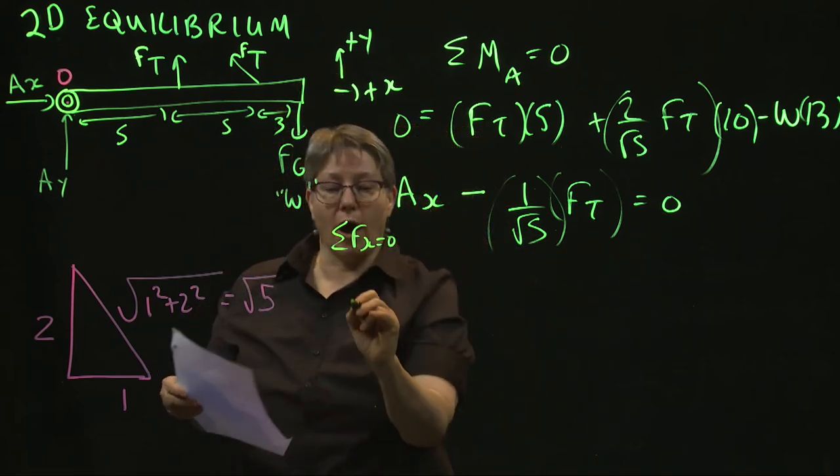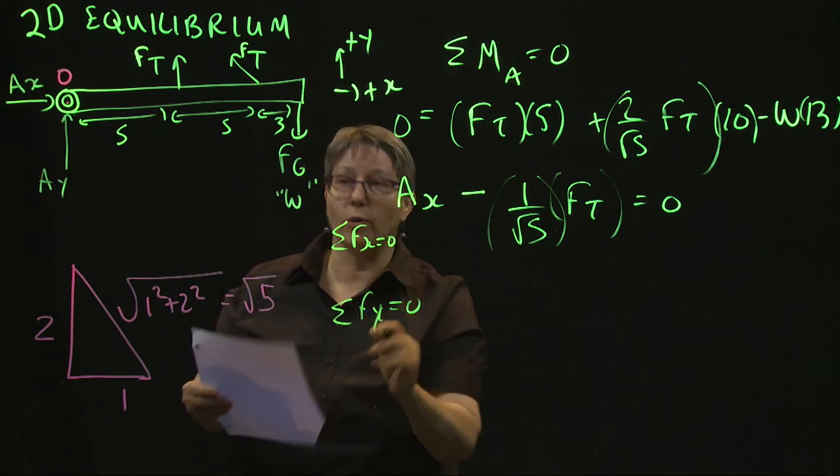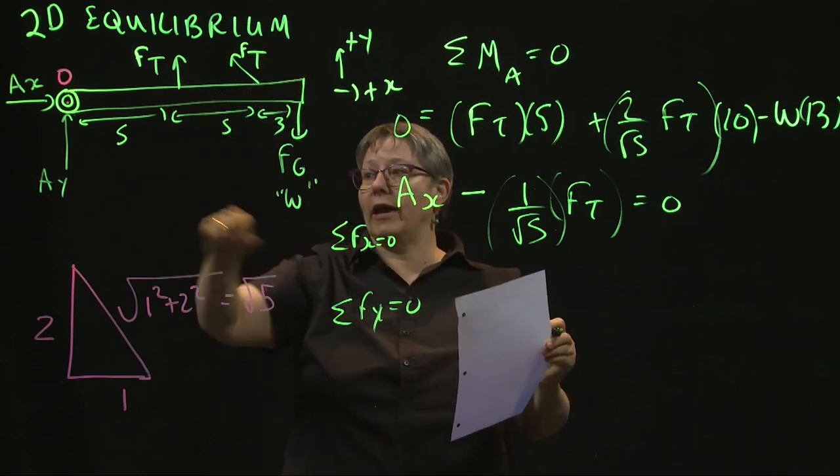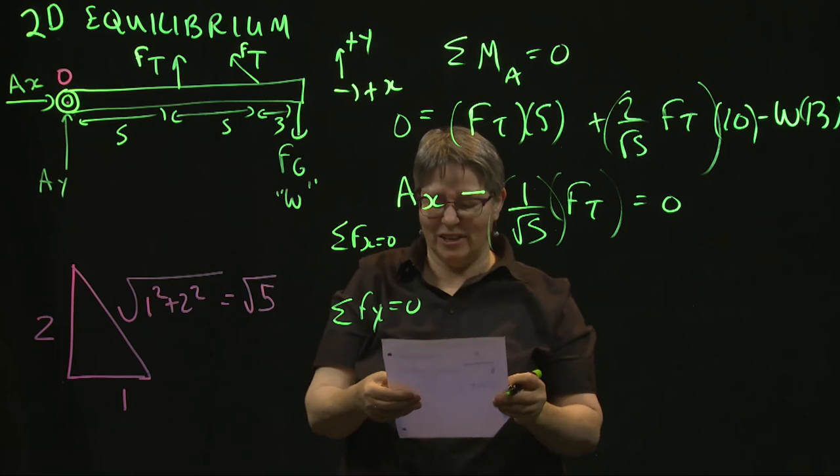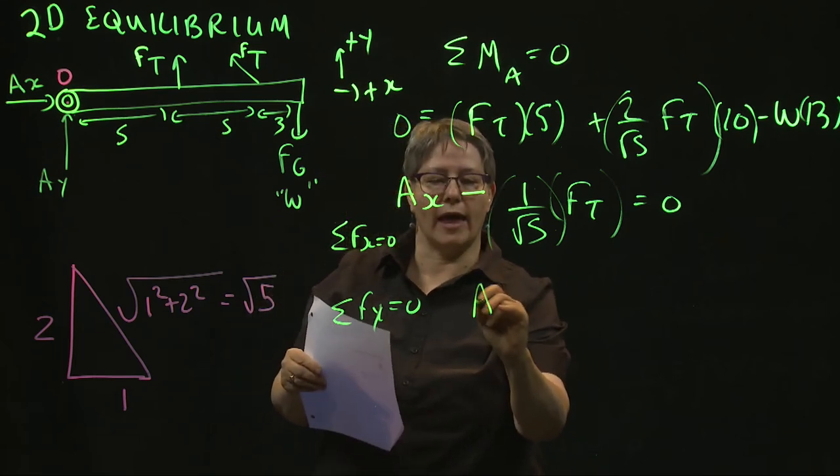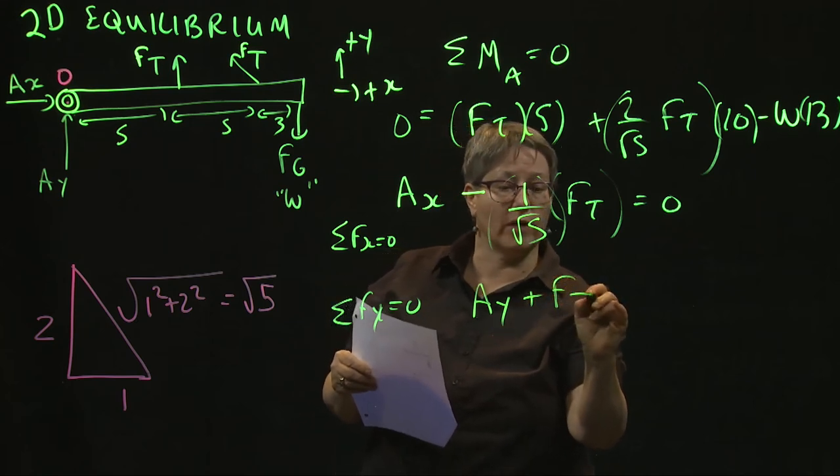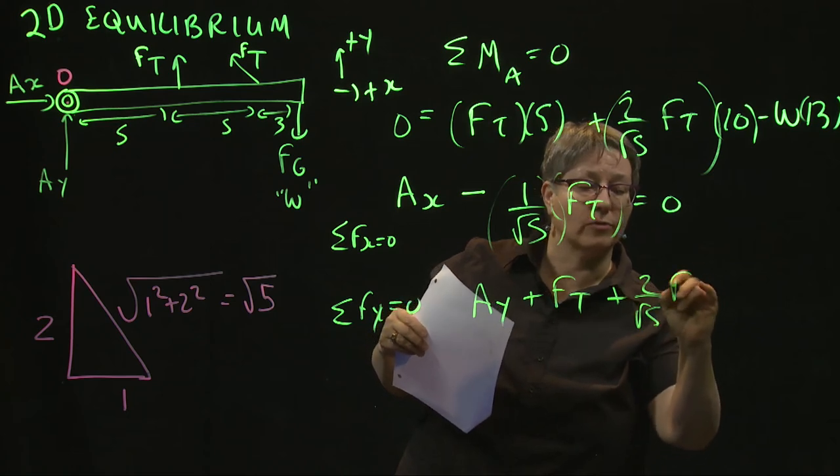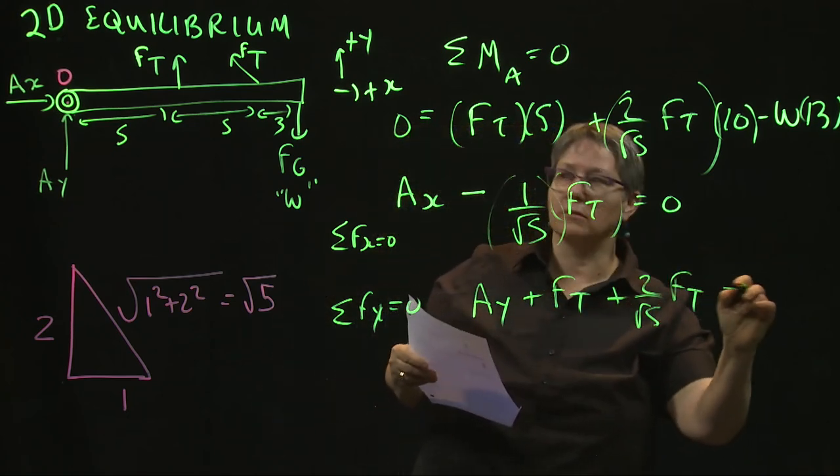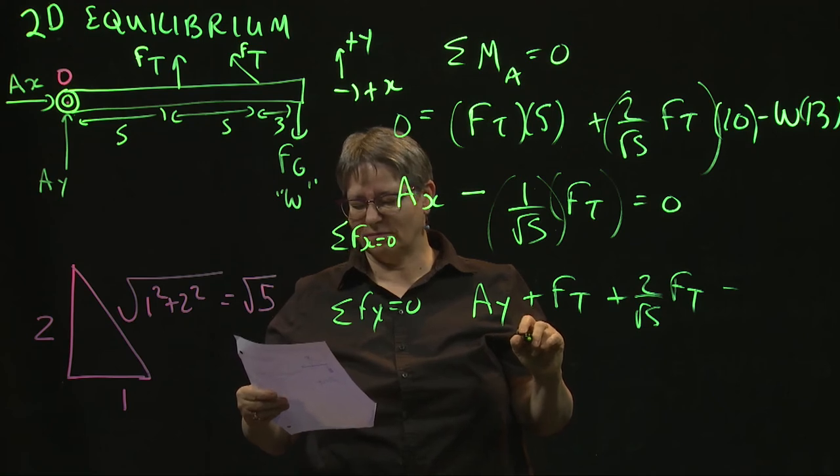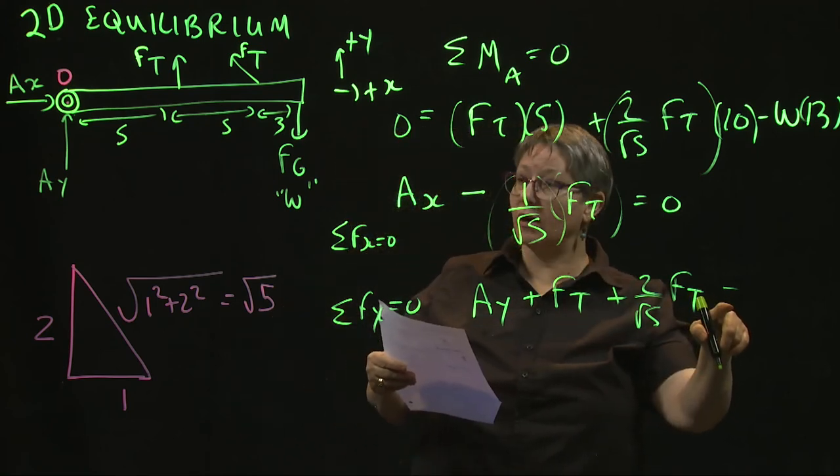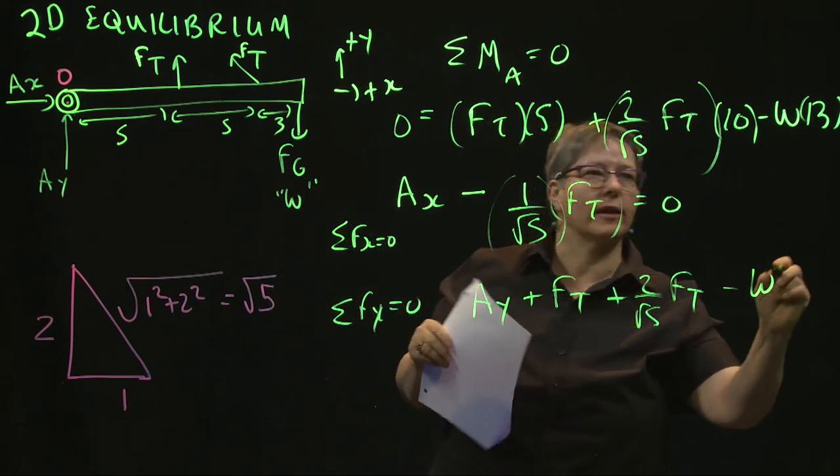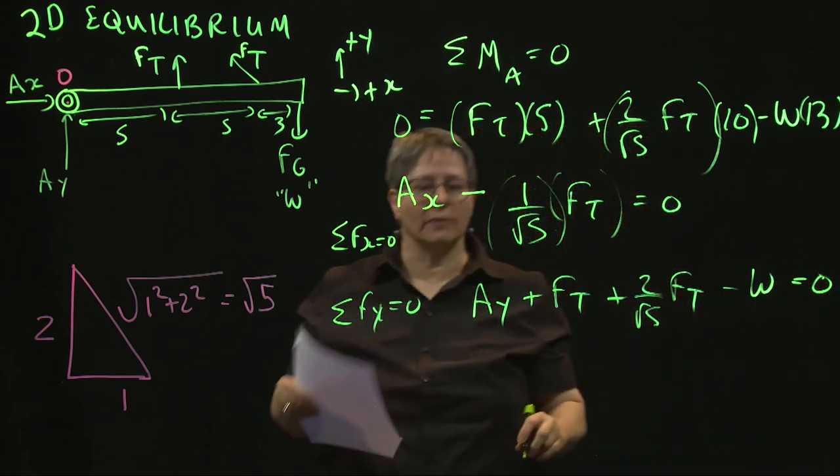Well, and then let's do the y directions. The sum of the forces in the y direction equals zero. One up, one up, one component up, one component down. So positive, positive, positive, negative. So we end up with, so Ay is positive, plus whatever the tension force is, plus two over square root of five, whatever our tension force is, minus our weight force, the 80 pounds. We know that number. That equals zero.